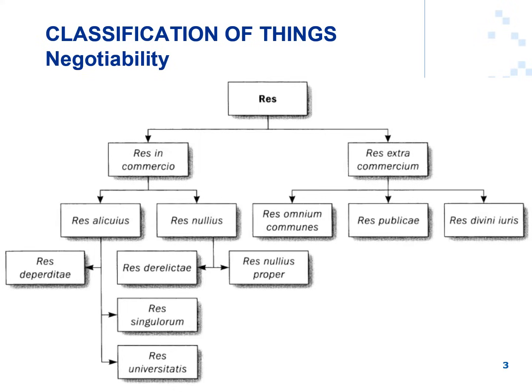What you have on your screen is the diagram I spoke about earlier. Your starting point is the term res — the Latin word for thing. We distinguish on the first level between res in commercio and res extra commercio. Res in commercio refers to your negotiable things — things in commerce — whereas res extra commercio refers to things outside of commerce.